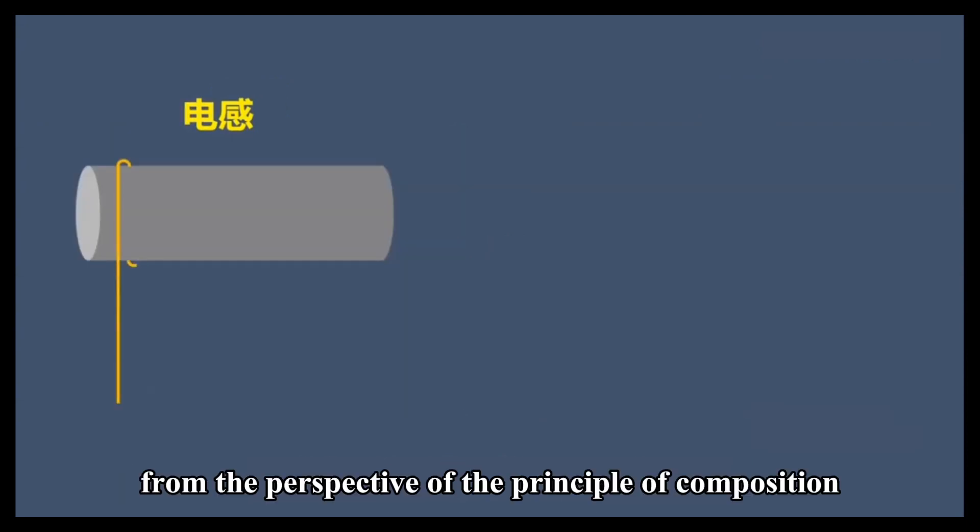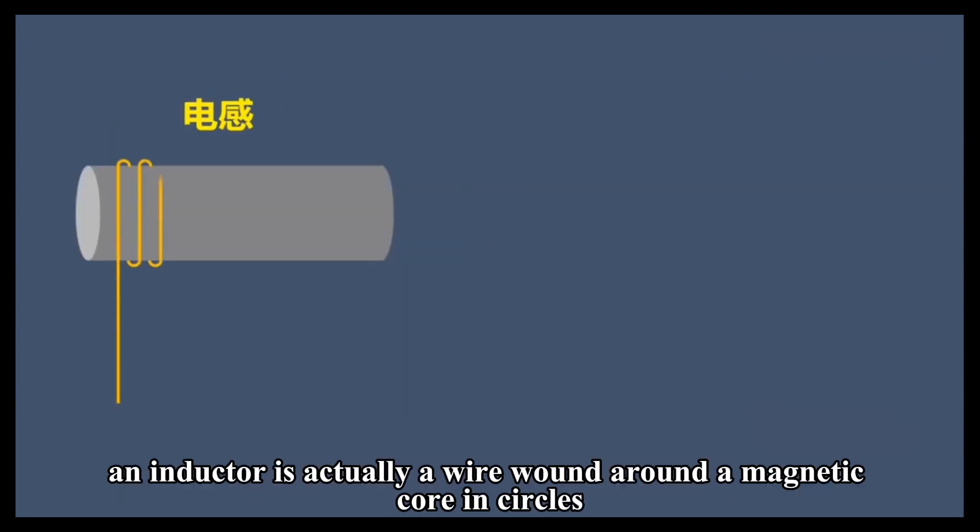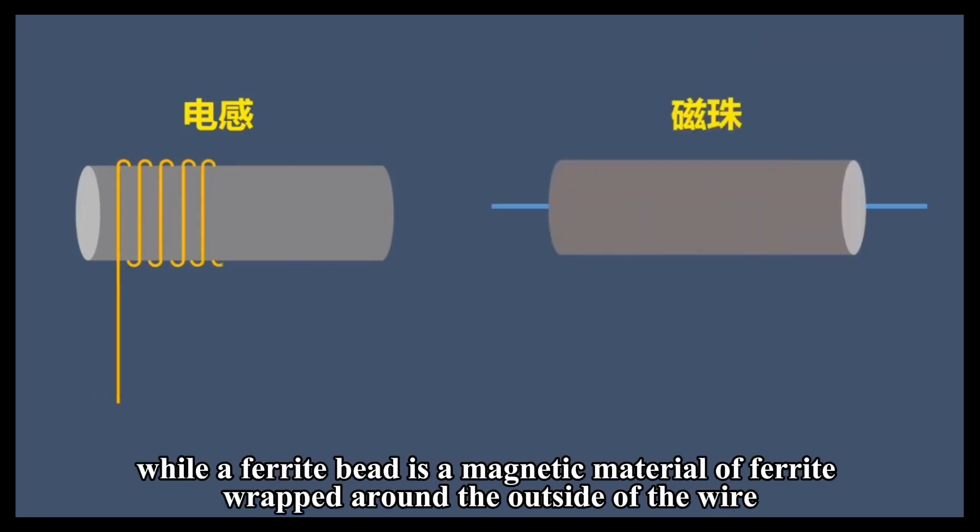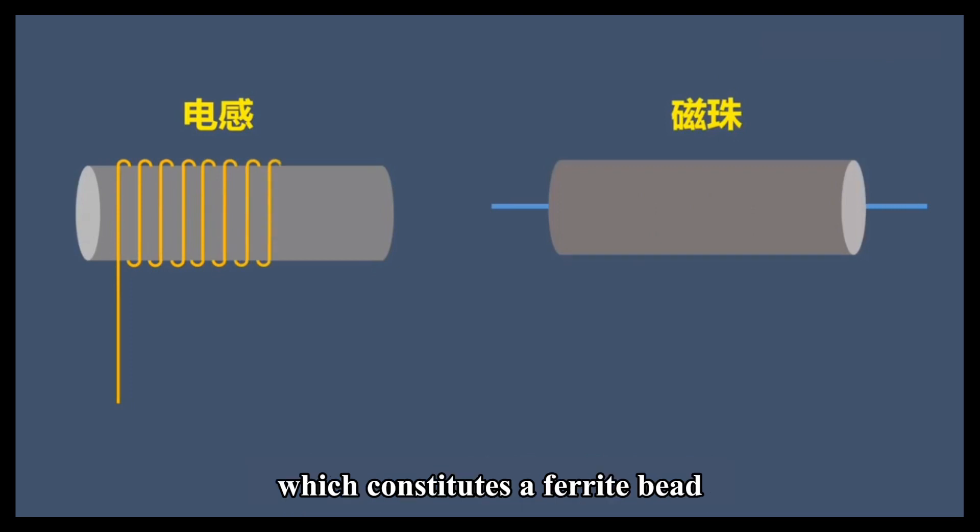First, from the perspective of the principle of composition, an inductor is a wire wound around a magnetic core in circles, while a ferrite bead is a magnetic material of ferrite wrapped around the outside of the wire.